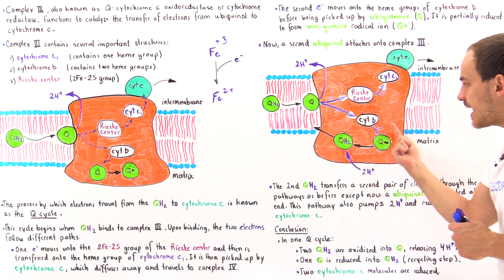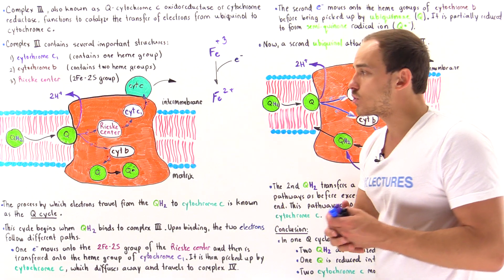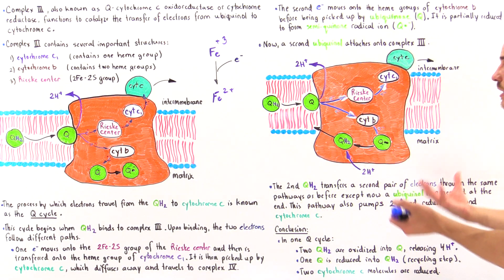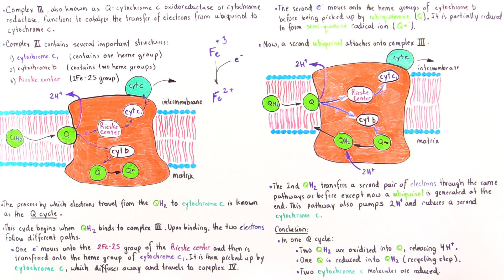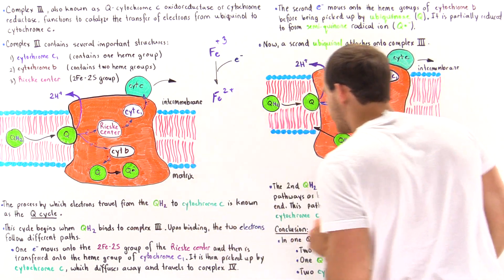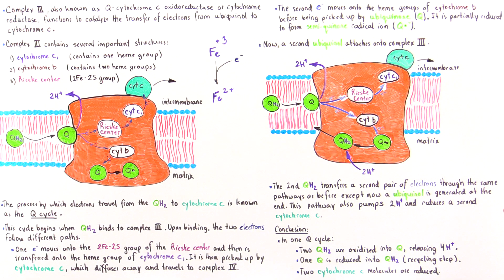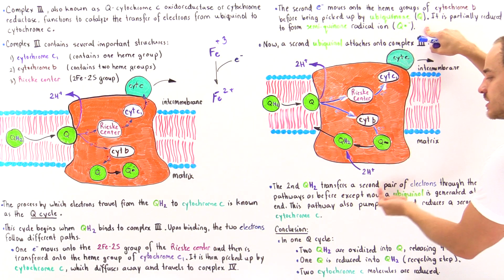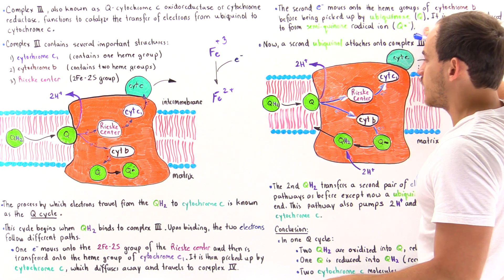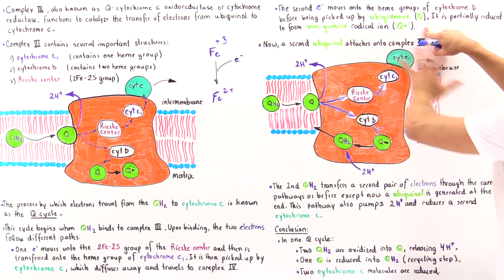The entire purpose of the cytochrome B pathway is to recycle those electrons so they are not lost and can be reused. The semiquinone radical ion, after gaining its second electron, abstracts two protons from the matrix of the mitochondria to regenerate ubiquinol. That ubiquinol detaches from complex three and re-enters the inner membrane, where it can be used again to generate more reduced cytochrome C molecules.